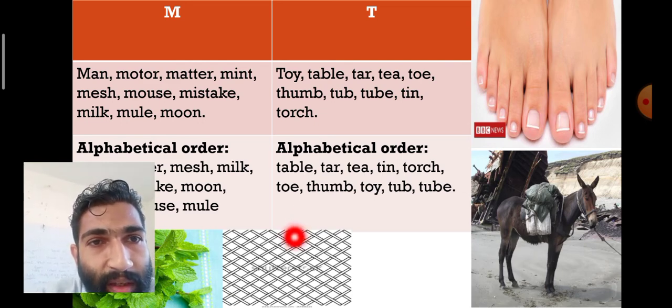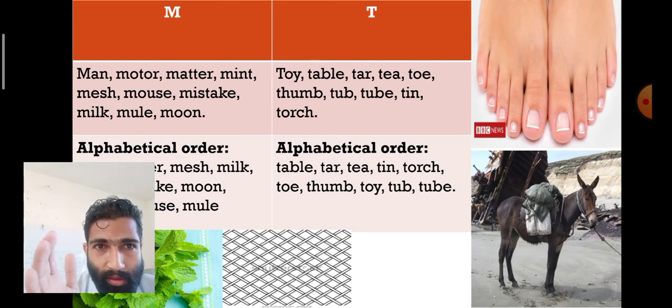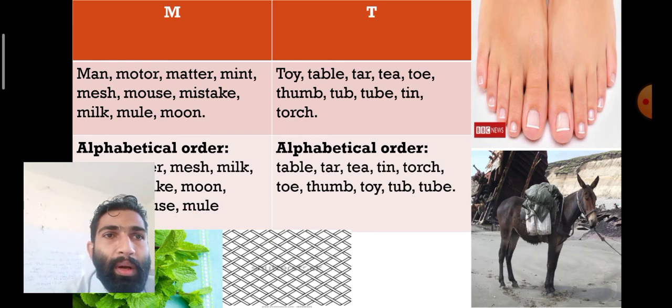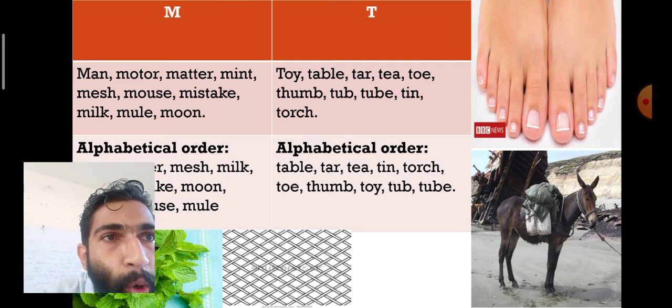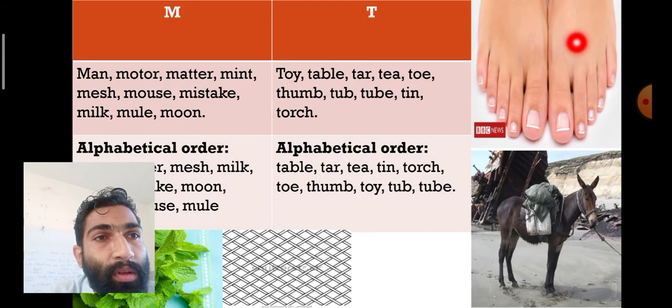Mesh is like a cloth with fiber or iron inside. Mint is a type of plant, a small herb. This is toe—you have to pronounce it 'toe.' Behind this is heel. Mule is a combination of horse and donkey.